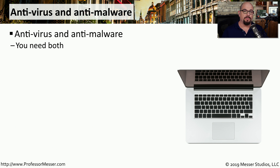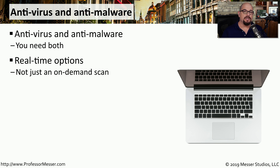If you want to stop malicious code from running on your computer, you'll need antivirus software and anti-malware software. You'll sometimes see these as two separate applications, although increasingly we're seeing them ship as a single integrated application. This is designed to identify any malicious software that may be executing in the memory of your computer. If this antivirus or anti-malware software identifies malicious software, then in real time it blocks that software from running on your system.